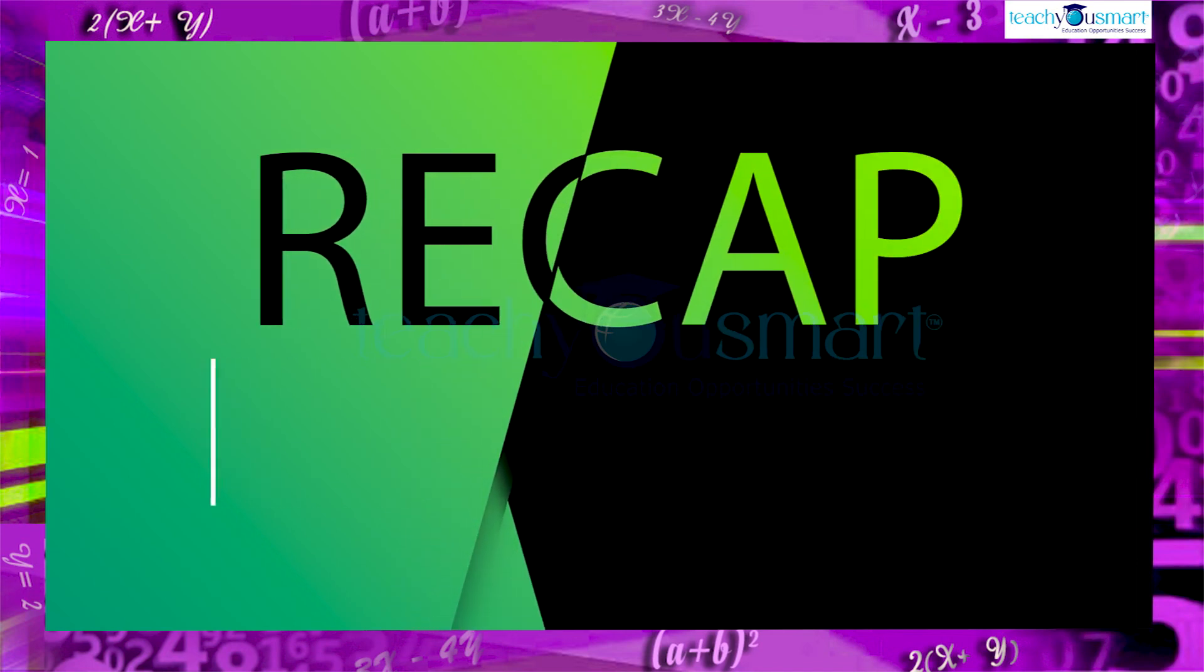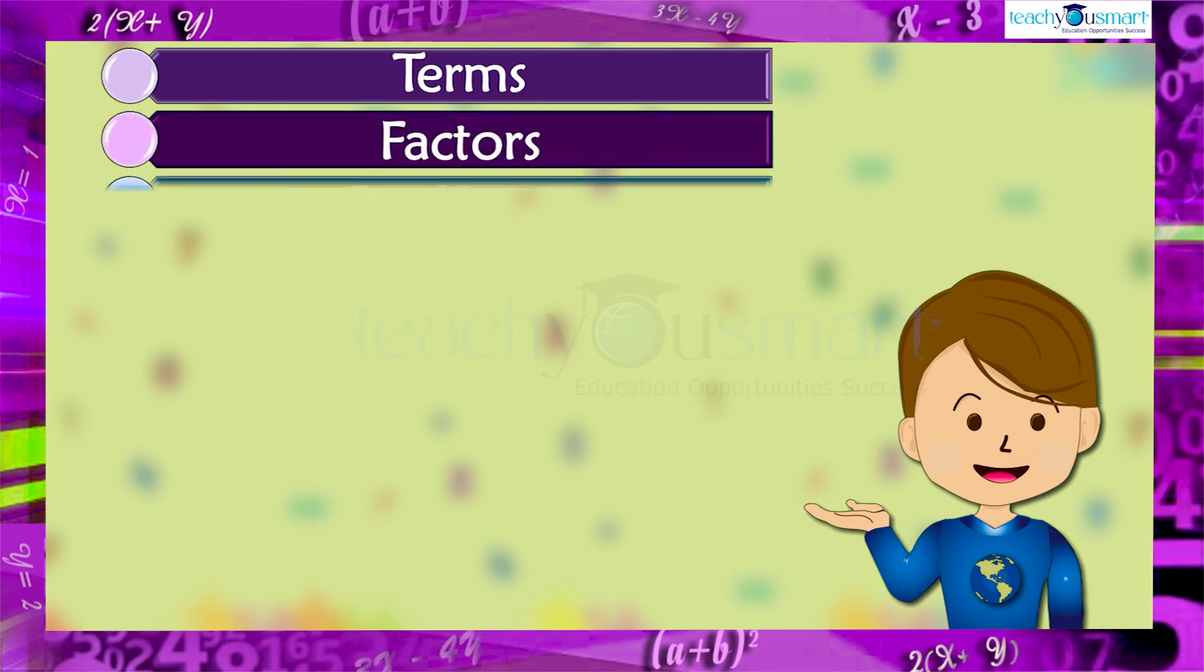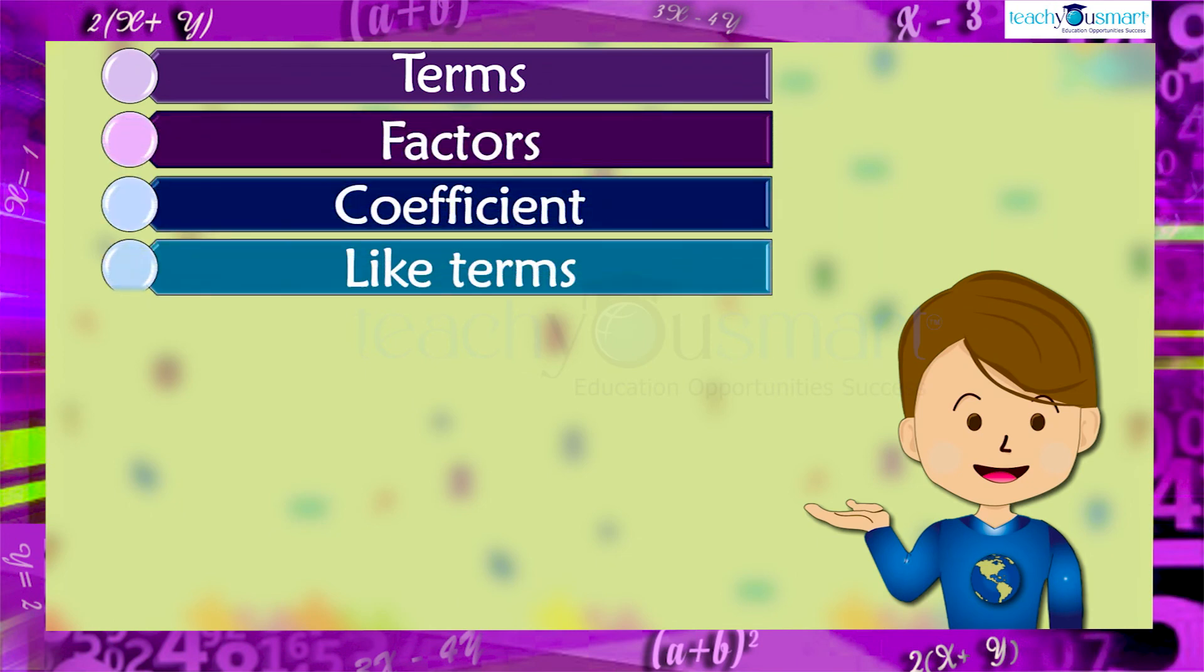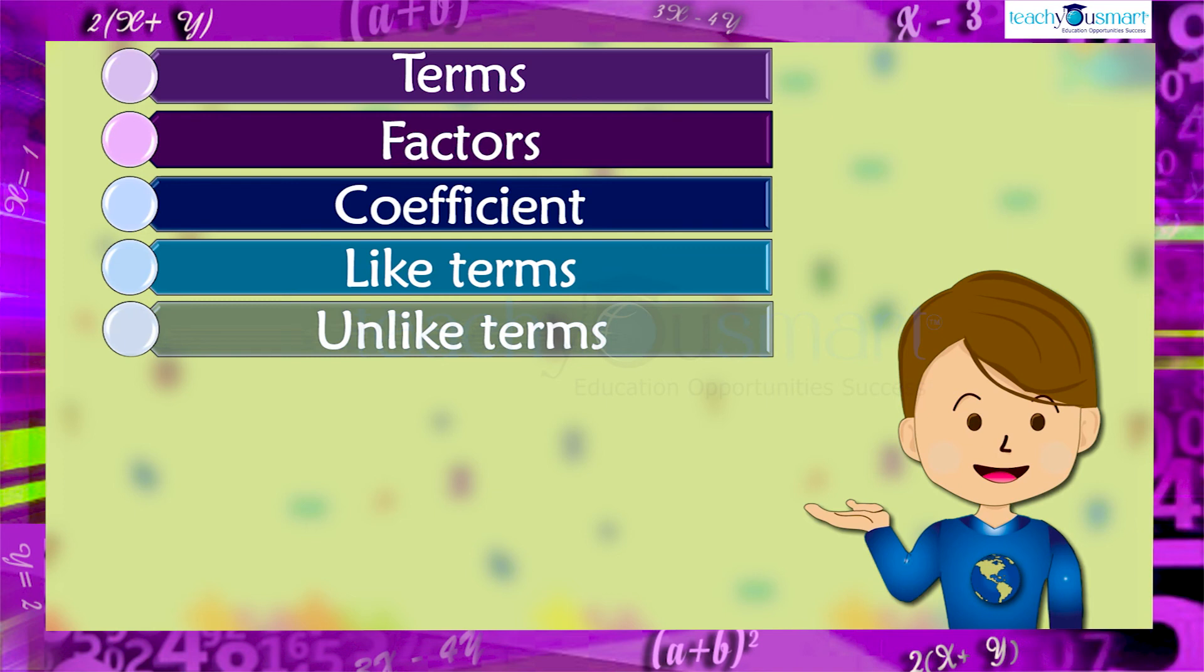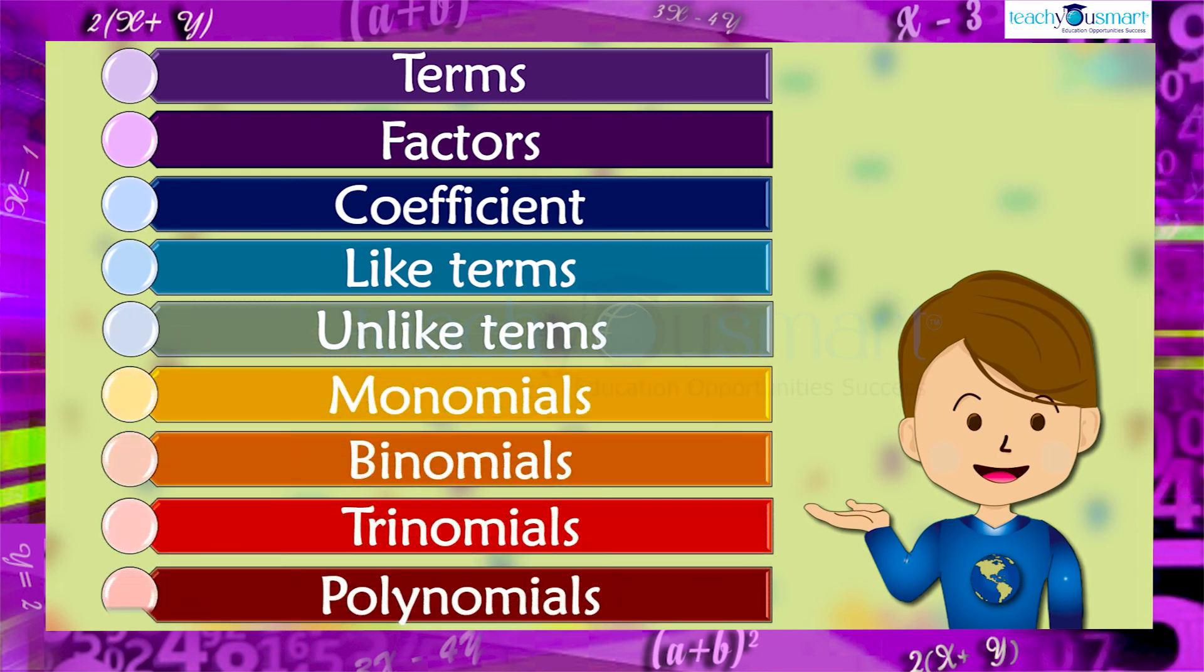Let's have a quick recap. Today we discussed terms, factors, coefficients, like terms, unlike terms, monomials, binomials, trinomials and polynomials.